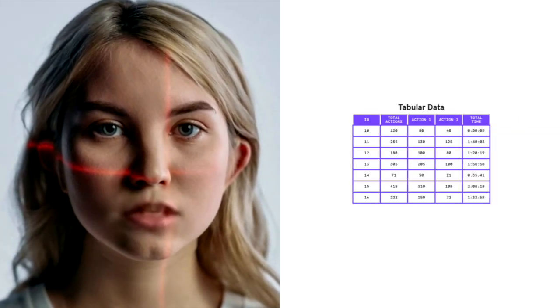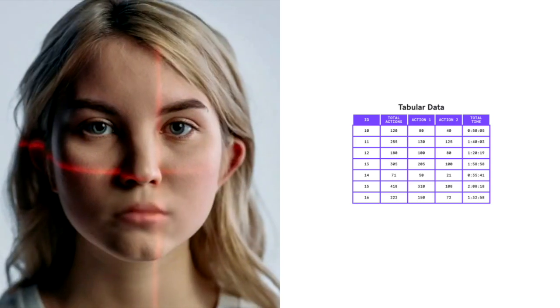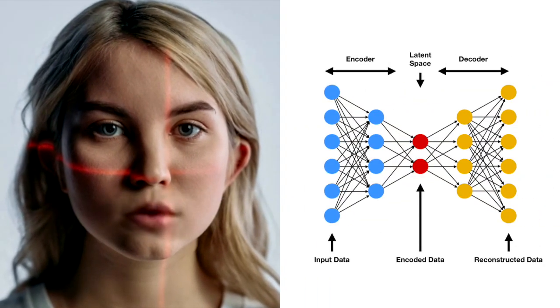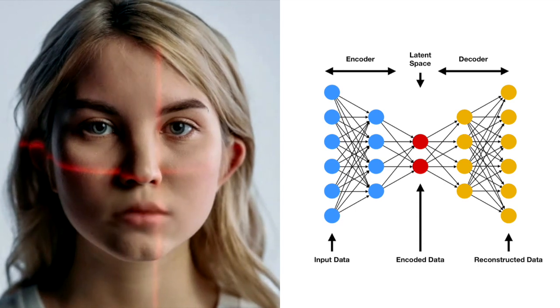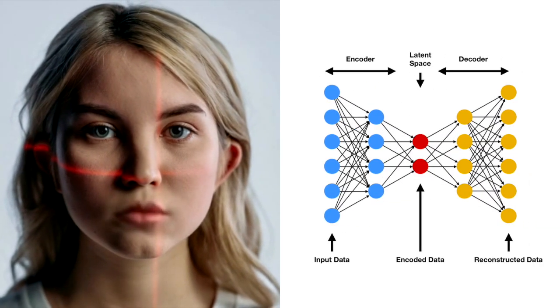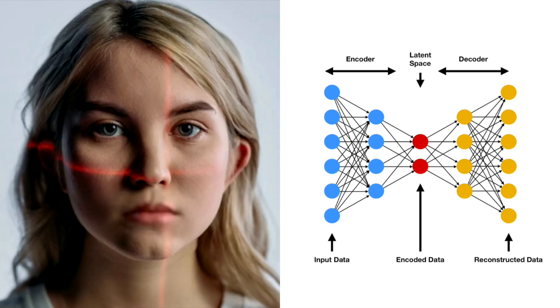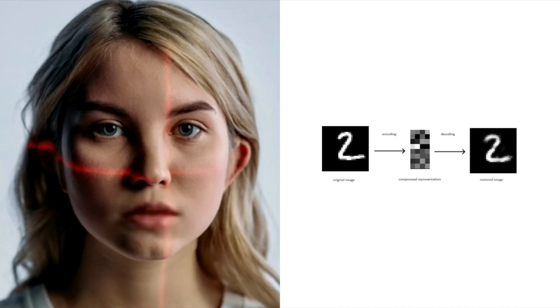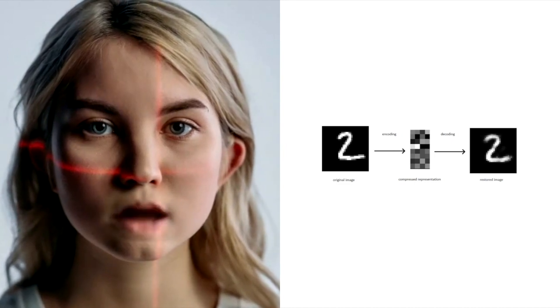If you're working with tabular data, one powerful approach is to employ autoencoders. By constructing symmetric neural networks, we can feed the tabular data into the model, aiming to reconstruct the original input at the output layer. During this process, the number of layers gradually decreases from the input layer to the middle layer, and then increases back to the output layer. By examining how well the input can be restored with minimal error, we can utilize the output of the middle layer as vector embeddings.